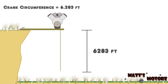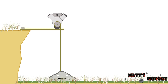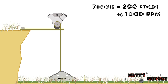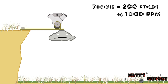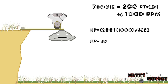That number is exactly 1,000 times the circumference of the crankshaft pulley. We're going to lift a rock that weighs 200 pounds from the bottom of the cliff to the top. Our engine produces 200 foot-pounds of torque at 1,000 RPM. Since our crankshaft circumference is 6.283 feet and the depth of the cliff is 6,283 feet, it's going to take 1,000 revolutions to lift the rock. Since we're revolving at 1,000 RPM, it will do this job in one minute. Using our equation, horsepower equals 200 times 1,000 divided by 5252, which gives us 38 horsepower.